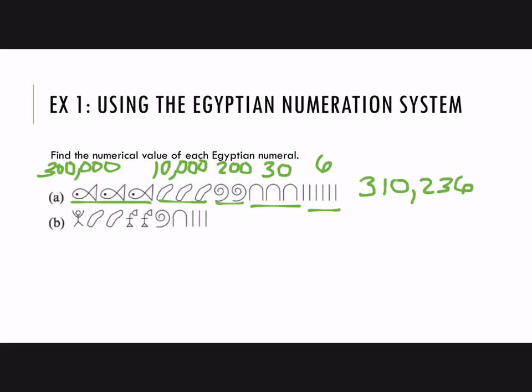Notice another thing that's different from our numeration system: we use a zero to show that we have a missing place value — in this case there are no thousands. In the Egyptian system, they used a lotus flower to represent thousands, but they didn't actually need a zero. If there were no thousands, they just wouldn't use that symbol. So you don't see any lotus flowers in part A, meaning there are no thousands in that number.